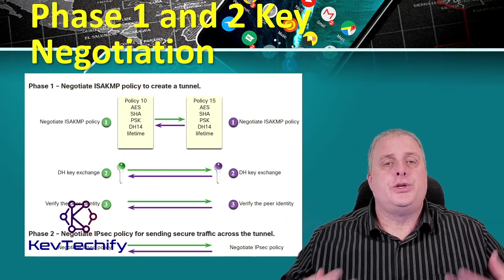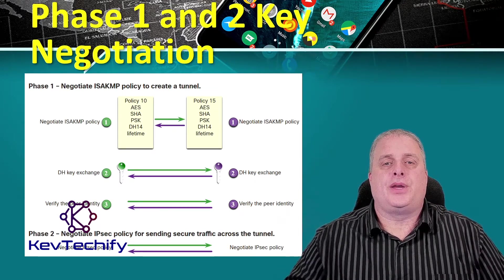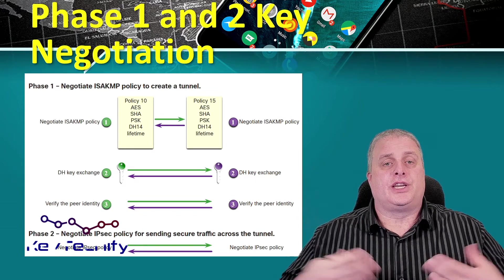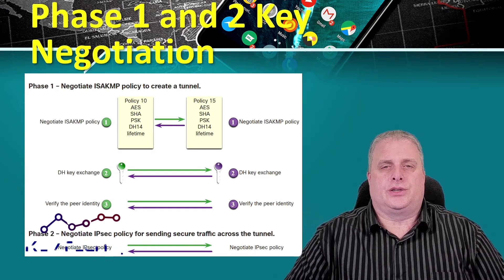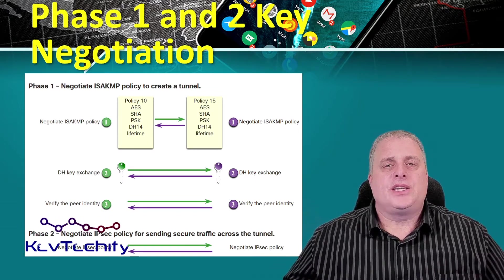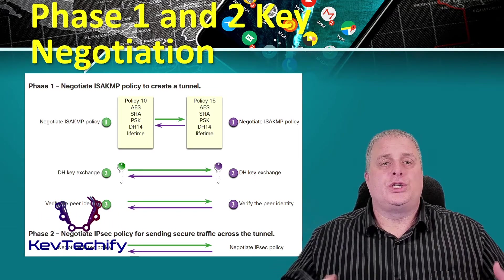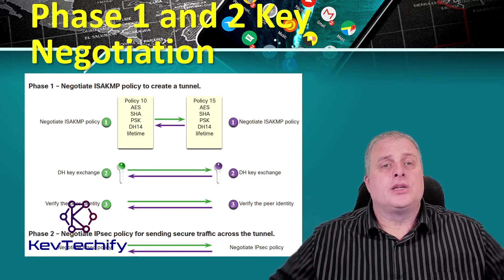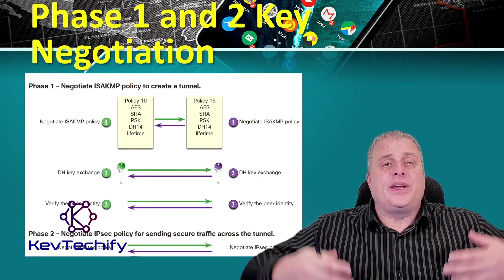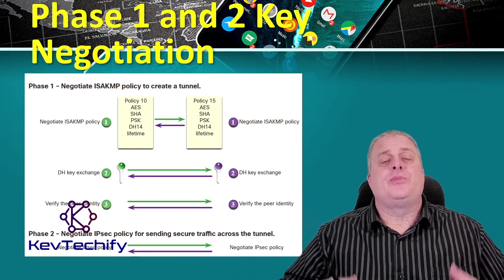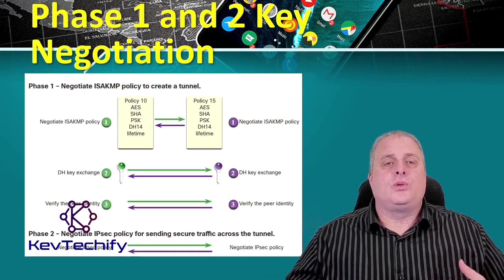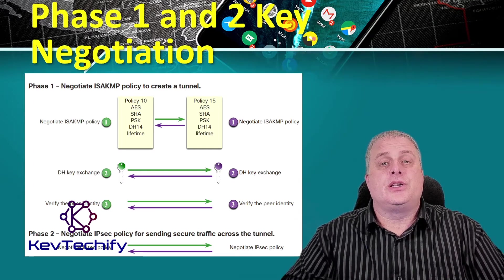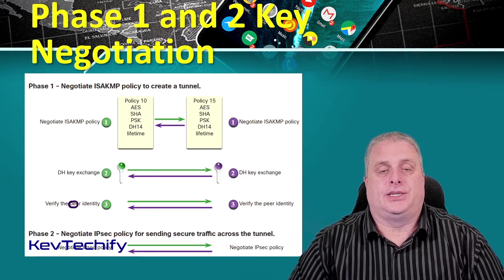In Phase 1, two IPsec peers perform the initial negotiations of the security associations. The basic purpose of Phase 1 is to negotiate the ISAKAMP policy, authenticate the peers, and set up a secure tunnel between the peers. This tunnel will then be used in Phase 2 to negotiate the IPsec policy.